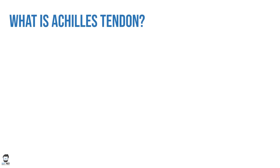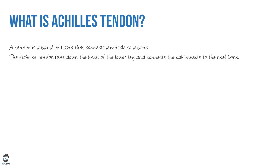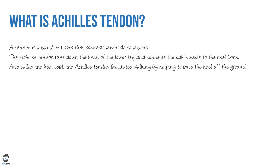What is the Achilles tendon? The Achilles tendon is basically a band of tissue that connects a muscle to a bone — that's what a normal tendon is. The Achilles tendon runs down the back of the lower leg and connects the calf muscle to the heel bone, also called the heel cord. It facilitates walking by helping to raise the heel off the ground.